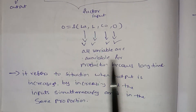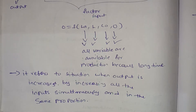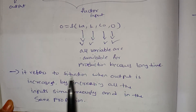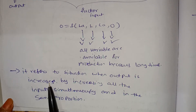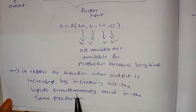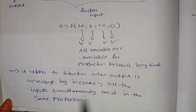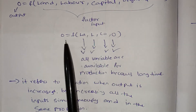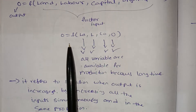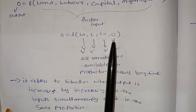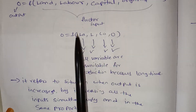In the long-run production function, all factors are variable. It refers to the situation when output is increased by increasing all the inputs simultaneously and in the same proportion — labor, land, capital, and organization all increase together.